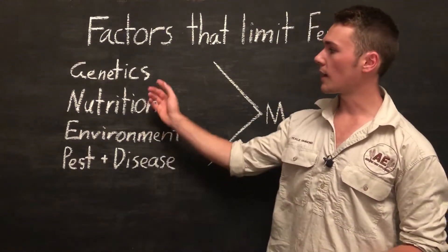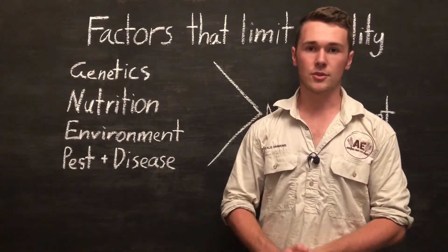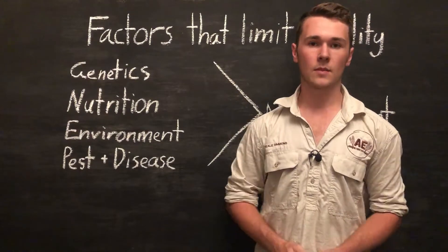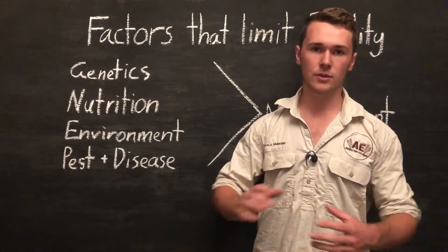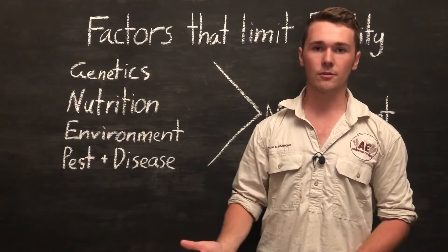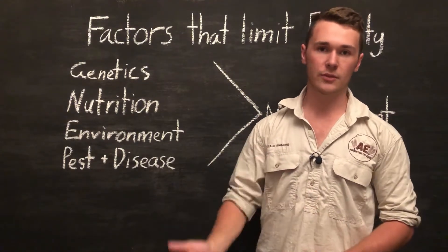But we can also have difference between our breeds. So different breeds of pigs or sheep can produce more or less offspring. So then we also have differences within a breed. So that just might be the difference between breeding stock, and choosing a better ram or a better bull to produce better offspring.